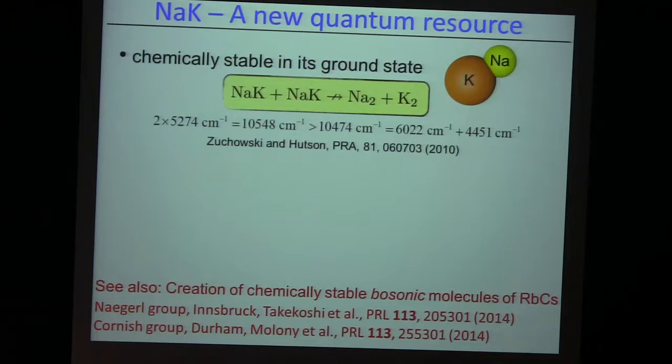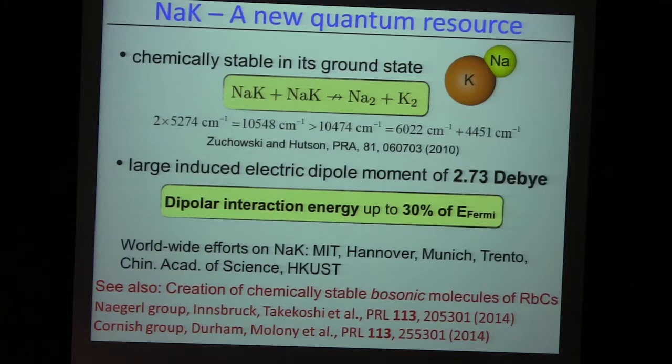In the first experiments providing ultra-cold fermionic molecules, KRb plus KRb did undergo a chemical reaction to K₂ and Rb₂. NaK does not have that chemical instability. The dipole moment that you can achieve with this molecule is very healthy — 2.7 Debye at maximum — which would give you a very strong dipole interaction energy, on the order of the Fermi energy. In terms of length scales, the dipolar length scale is on the order of the particle spacing — it's again a strongly interacting gas.